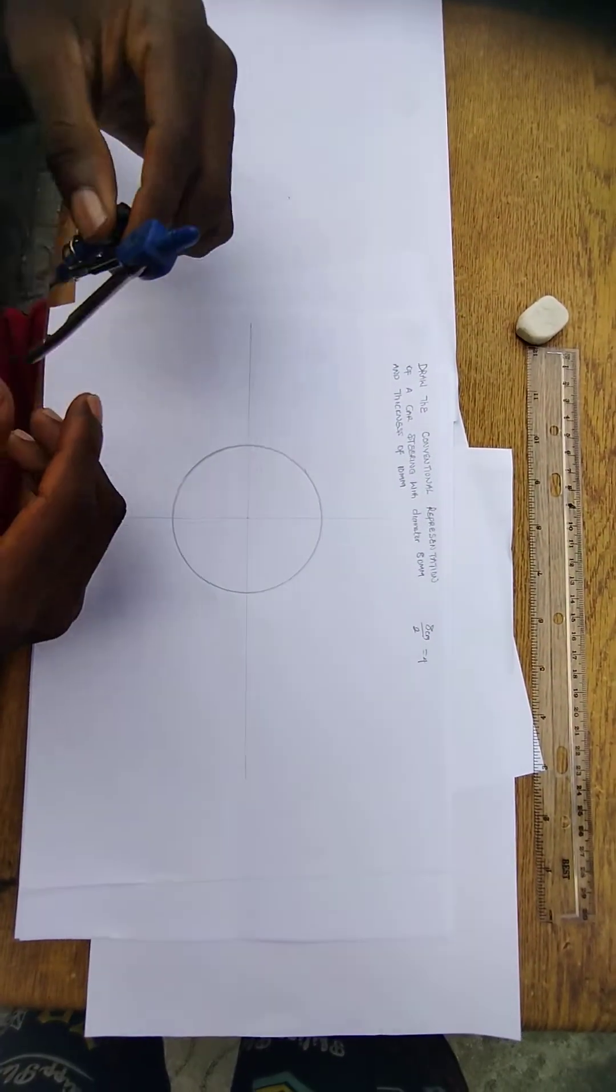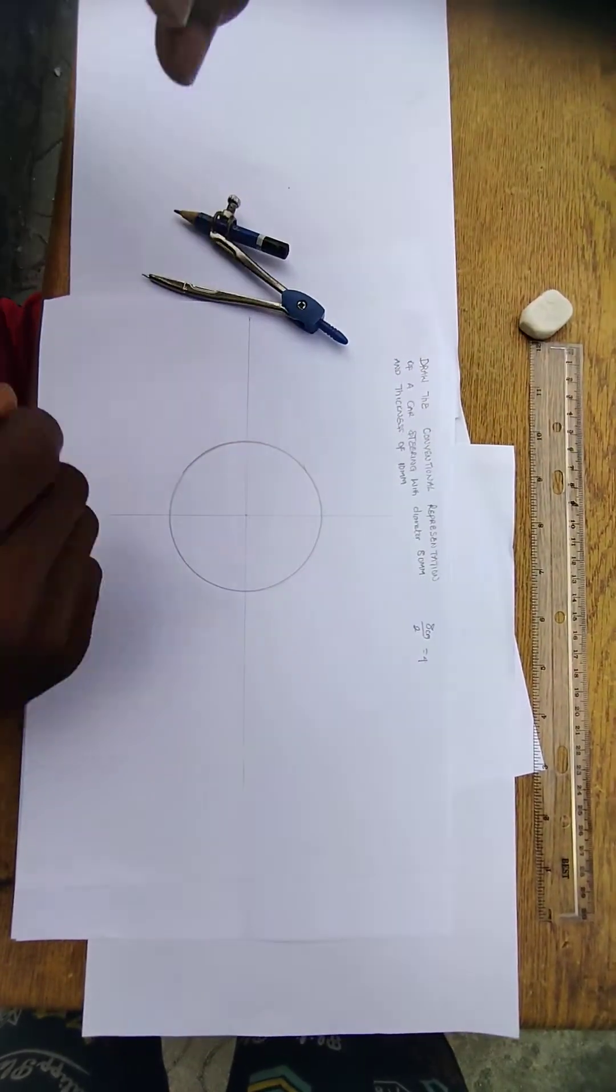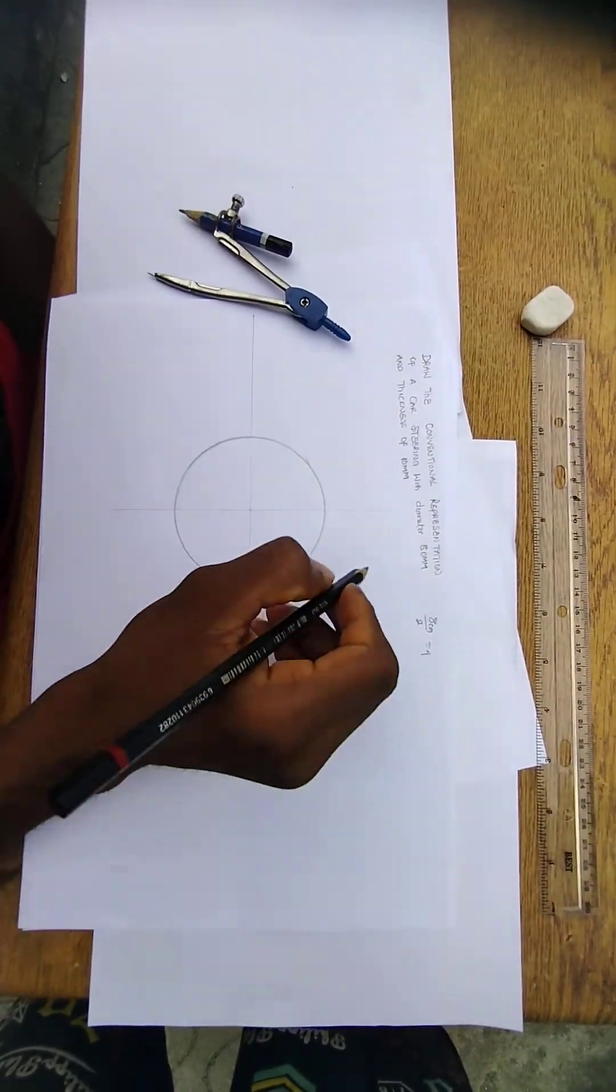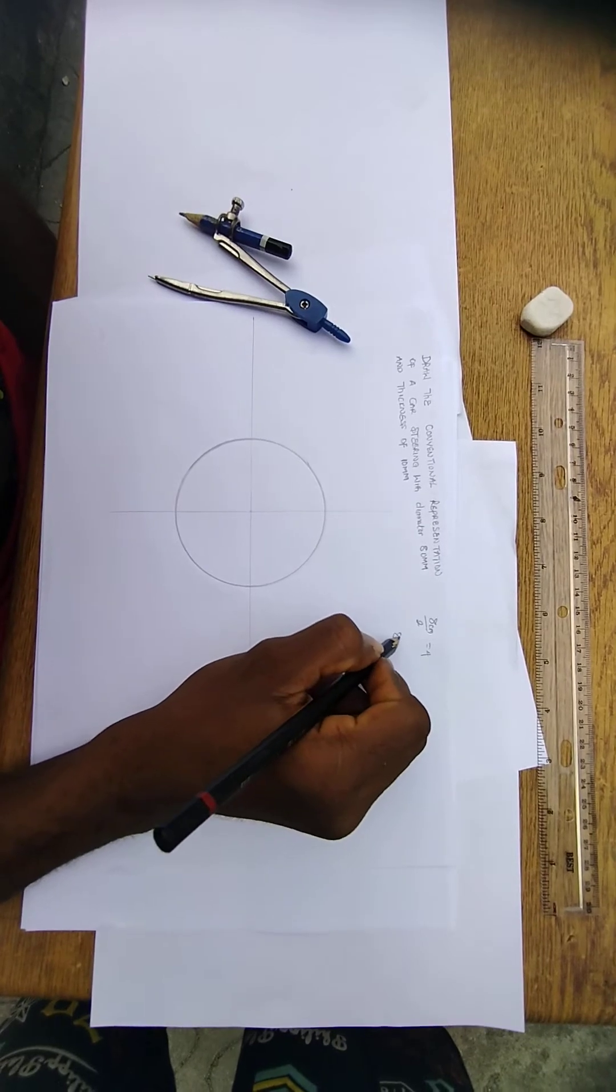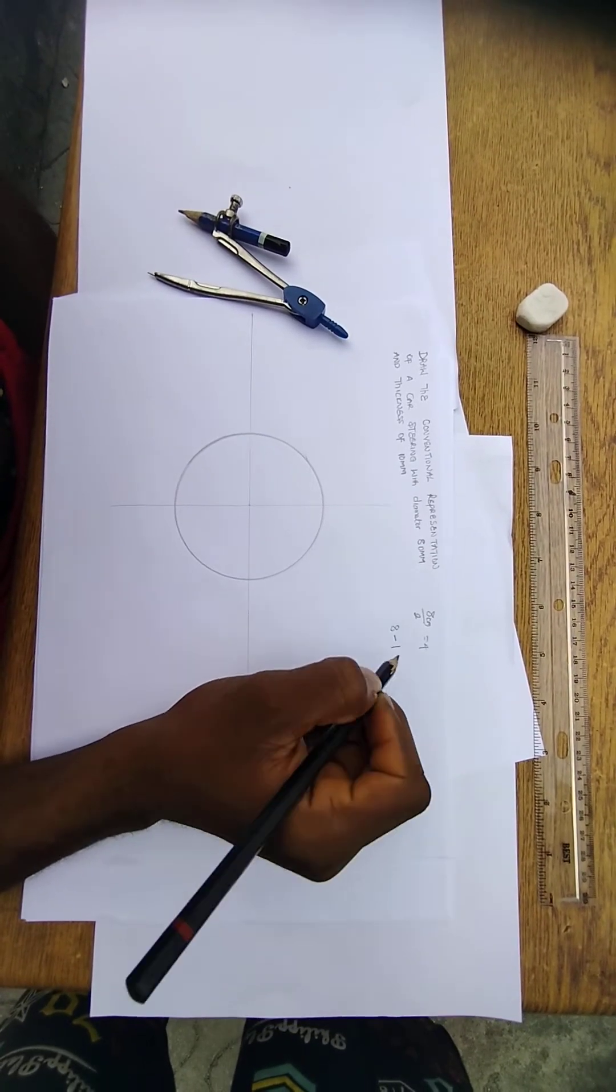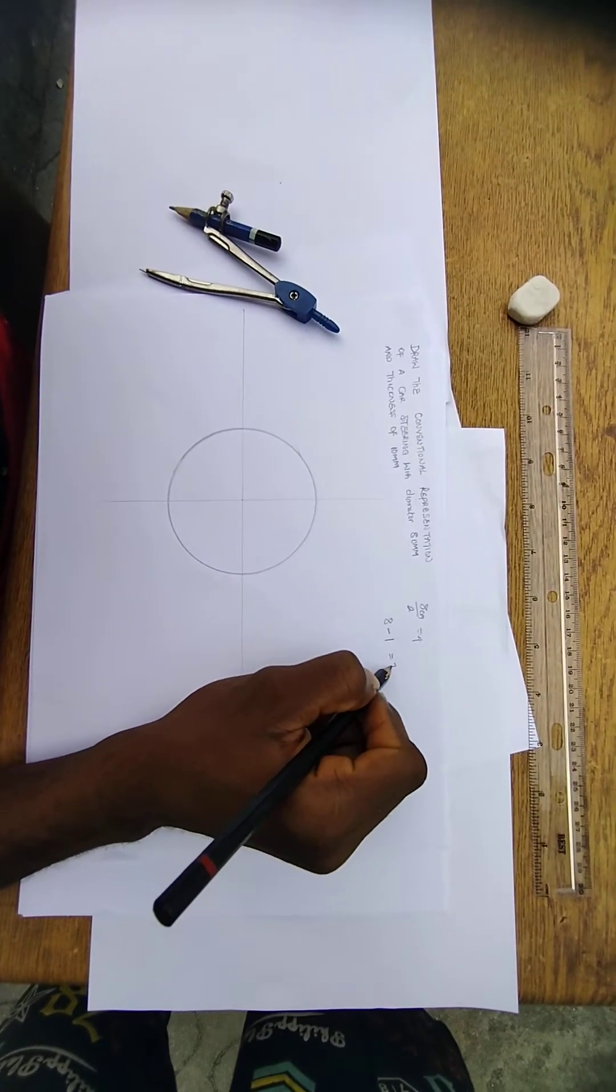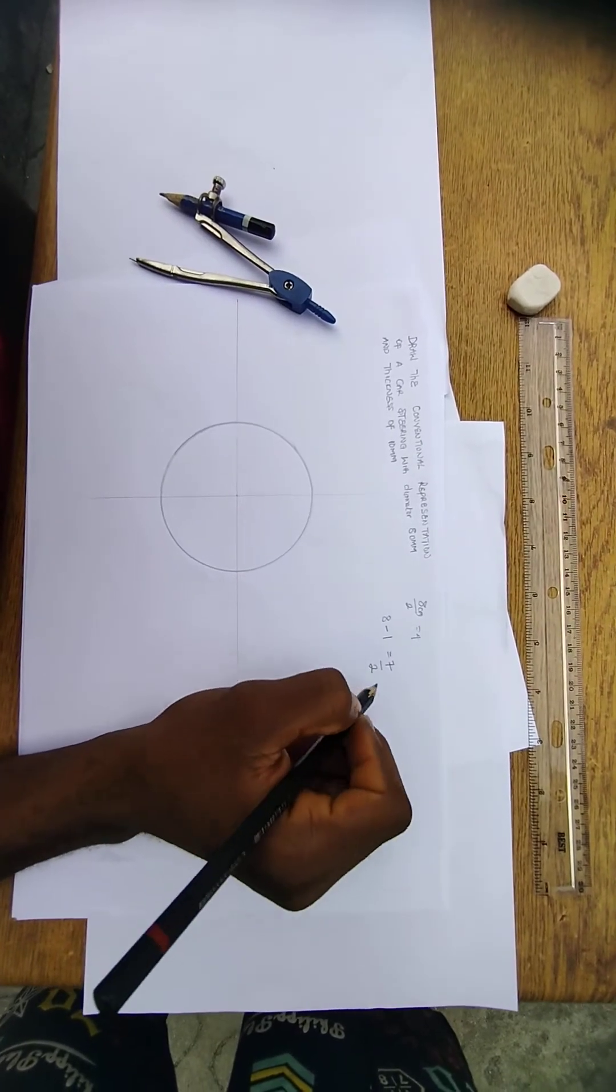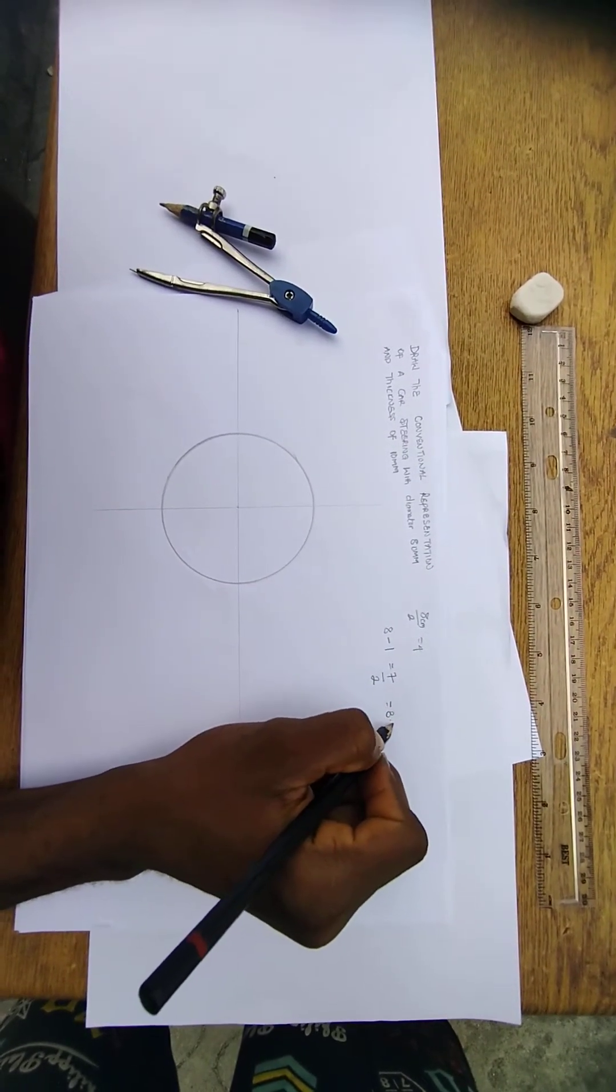Now this is the first thick circle. Now, the shortcut to get the other small circle is, this circle is 8 cm, minus it 1. If you minus it 1, what will you have? You have 7. Now divide this 7 by 2, trying to get the radius, you get 3.5.